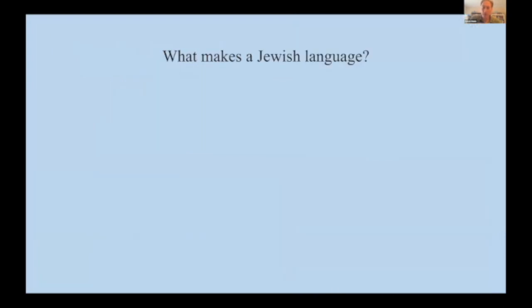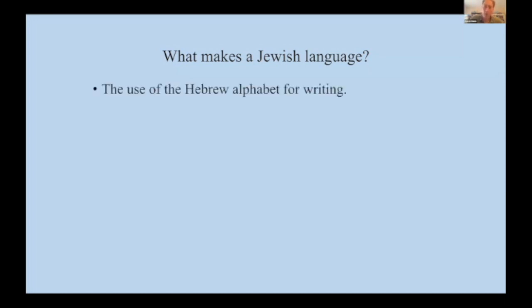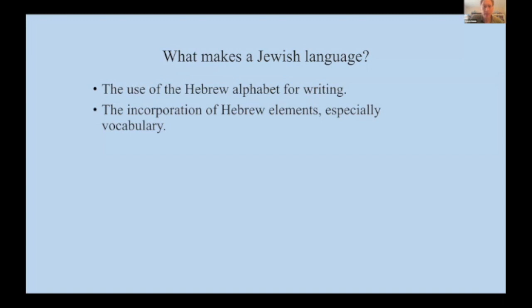I want to talk about what makes this type of Judeo-Italian a Jewish language. To my mind, a Jewish language has to have one of four features, ideally more than one. The first is the use of the Hebrew alphabet for writing — we've already seen lots of examples of Judeo-Italian written in the Hebrew alphabet. The second is the incorporation of Hebrew elements, especially Hebrew vocabulary items. We saw in the Hanukkah and Purim songs the mixing in of Hebrew words, and we also see Hebrew elements in this literary variety of Judeo-Italian.